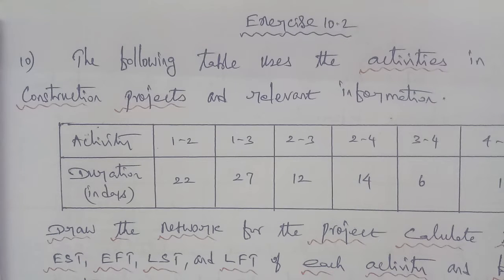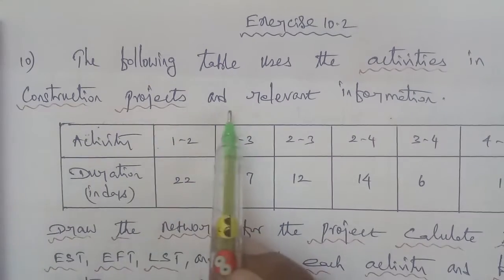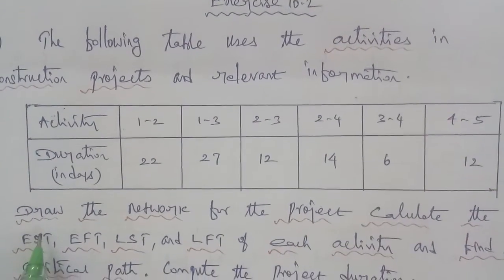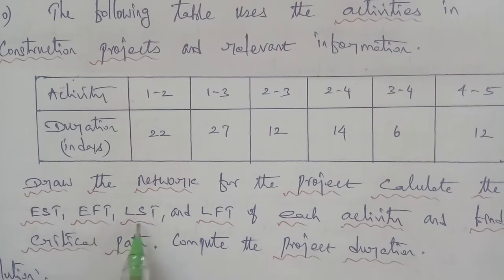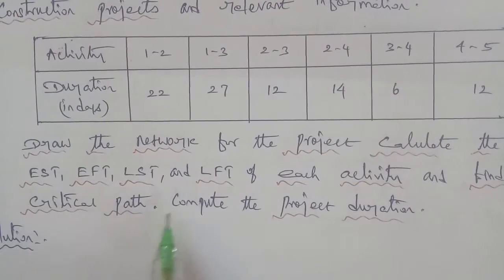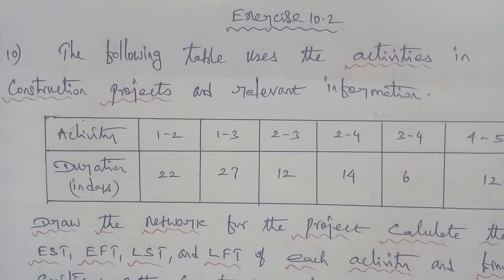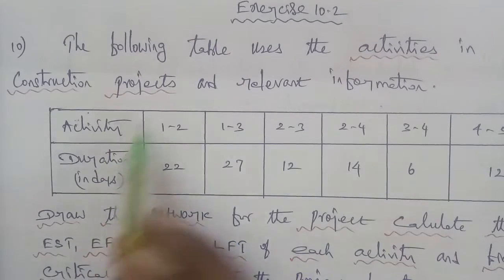Hi students, this is Business Maths Exercise 10.2, Question Number 10. The following table gives the activities in a construction project with relevant information. We need to draw the network for the project, calculate the earliest starting time, earliest finishing time, latest starting time and latest finishing time of each activity, find the critical path, and compute the project duration.